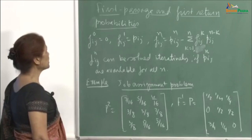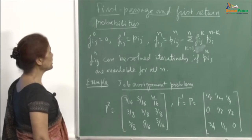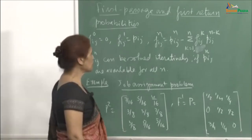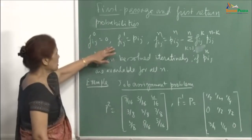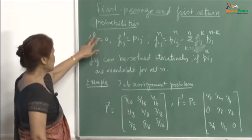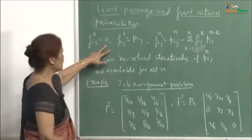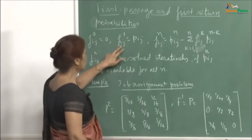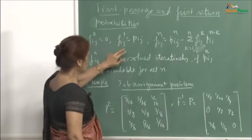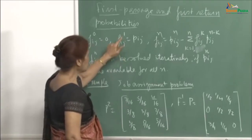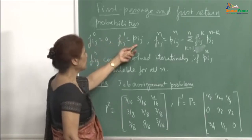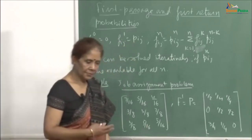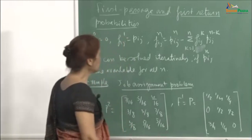We will continue our discussion with first passage and first return probabilities, how to compute them. f_ij(0) will be 0, because there cannot be any transition in 0 time. Then f_ij(1), the first time j is reached from i in one step, will simply be p_ij. So the first step transition probabilities are your first time transition probabilities also.